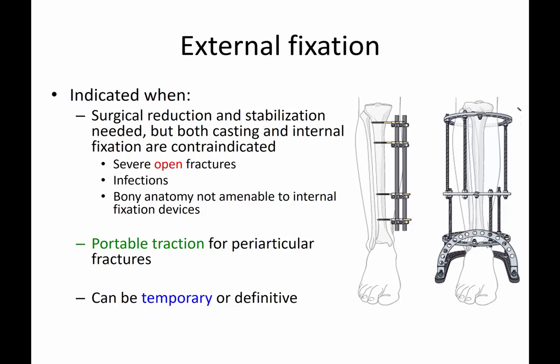External fixation is indicated when surgical reduction and stabilization are needed but casting and internal fixation are contraindicated. Examples include severe open fractures with poor soft tissue coverage where an implant may be exposed to contamination and infection, cases with bone infection where you don't want an indwelling metal implant since external fixators are always removable, or cases where the bony anatomy is not amenable to internal fixation devices.